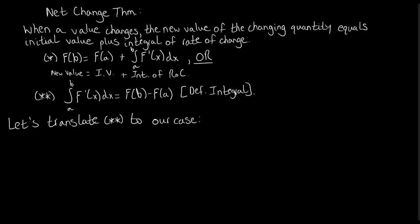The net change theorem tells us: capital F of b is the new value, capital F of a is the initial value, and the integral of F prime of x is the rate of change. We can also translate this using the definite integral definition — subtracting F of a from both sides gives us F of b minus F of a, which is the evaluation theorem: the integral of F prime of x equals F of b minus F of a.